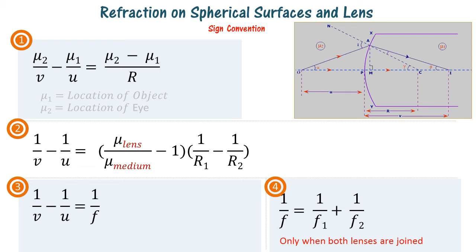We'll be covering refraction on spherical surfaces and lenses in this video. When solving problems in respect of lenses and spherical surfaces, it may appear that there are too many formulas and too many special cases, with u taking a negative sign sometimes and f taking a positive sign at other times. It is actually not so difficult — there are only four equations which you need to understand well to solve these problems.